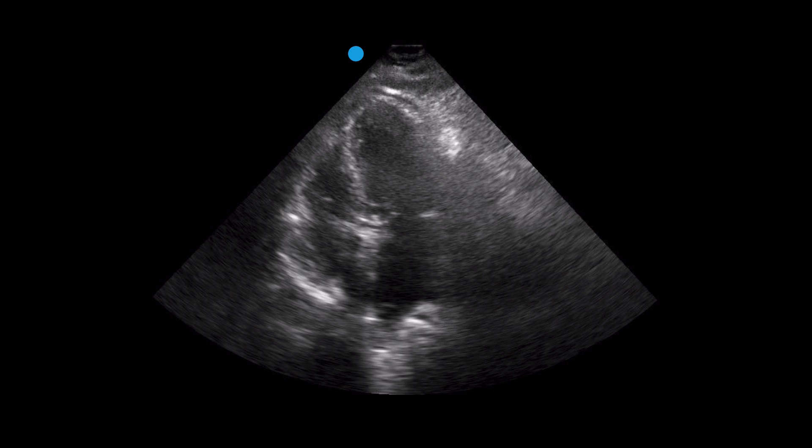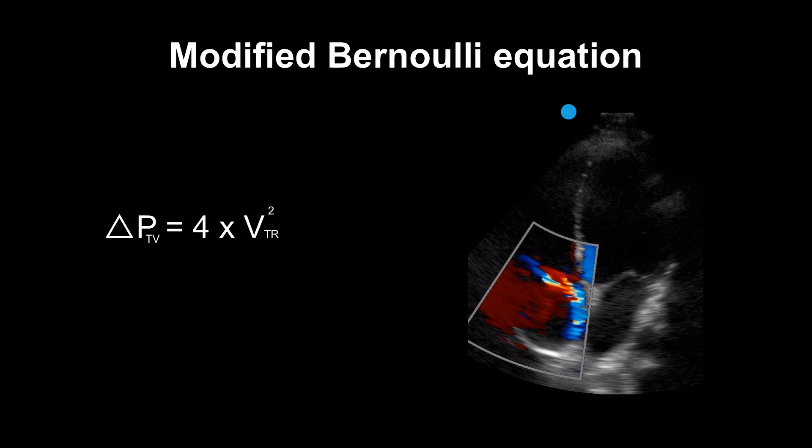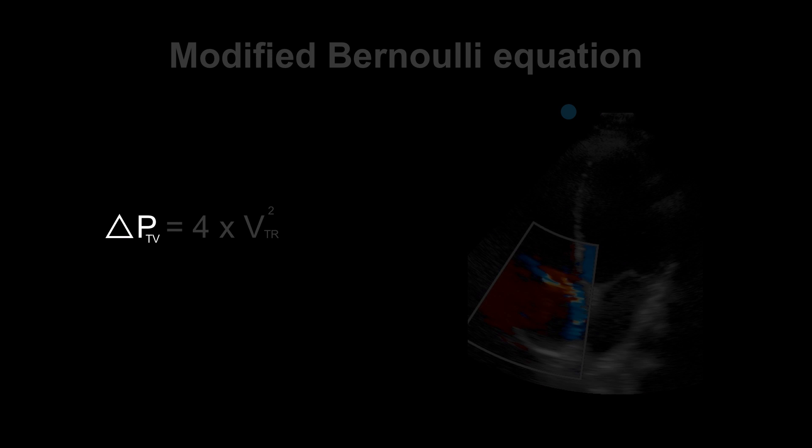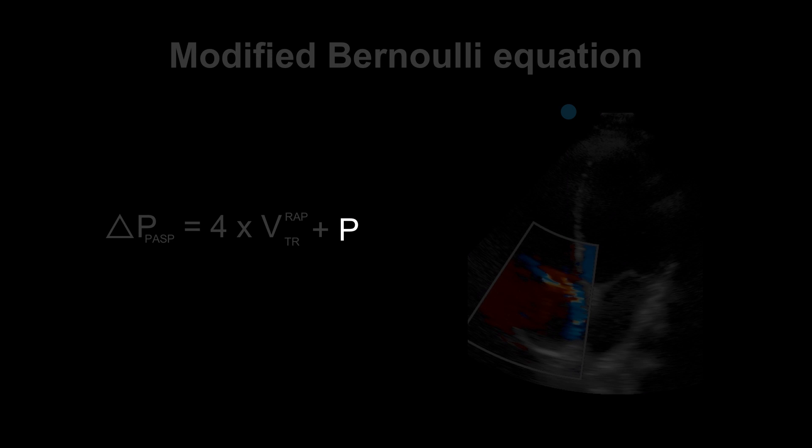To do this, we first need to determine the pressure gradient that exists across the tricuspid valve. To determine the pulmonary artery pressure, we'll use the modified Bernoulli equation. We'll need to be able to calculate the velocity across the tricuspid valve and then convert this into the pressure gradient across the tricuspid valve. To be able to calculate the pulmonary artery systolic pressure, we'll then need to add the pressure contribution coming from the right atrium as well, and this will give us the pulmonary artery systolic pressure.